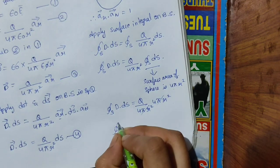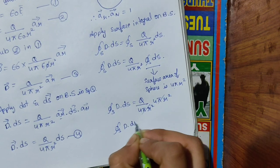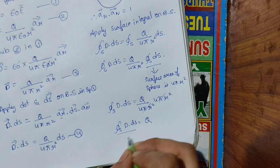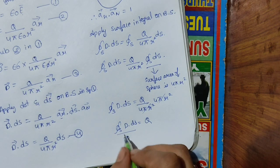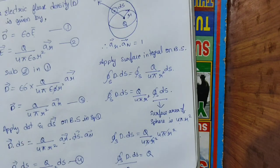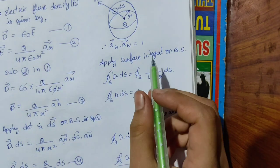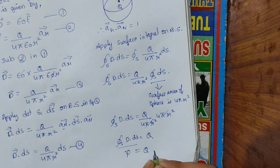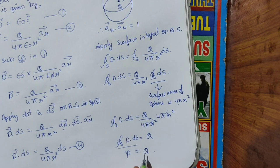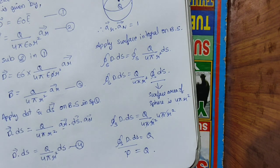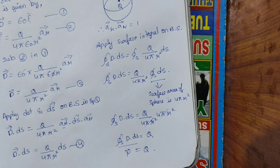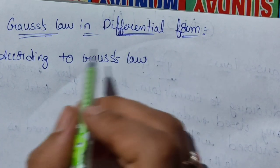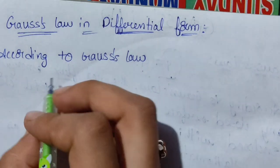Substituting, ∮ D · dS = Q. This is the total flux passing through the surface, so flux equals Q. This is Gauss's Law in integral form. The next topic is Gauss's Law in differential form.